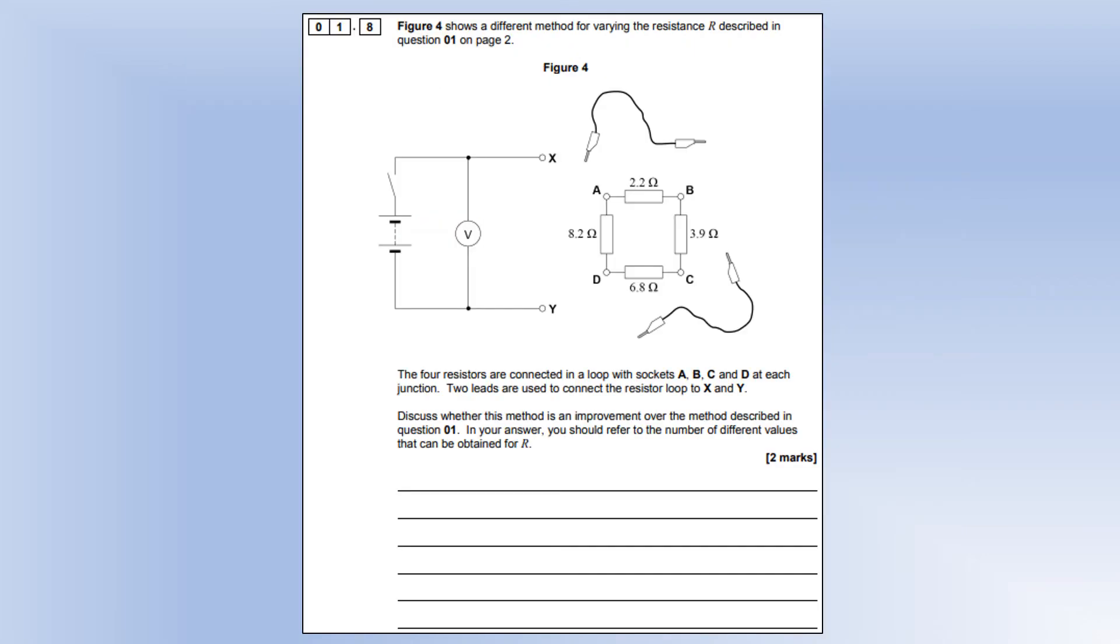Four resistors are connected in a loop with sockets A, B, C and D at each junction. Two leads are used to connect the resistor loop to X and Y. Discuss whether this method is an improvement over the method described in question one. In your answer, you should refer to the number of different values that contain for R.